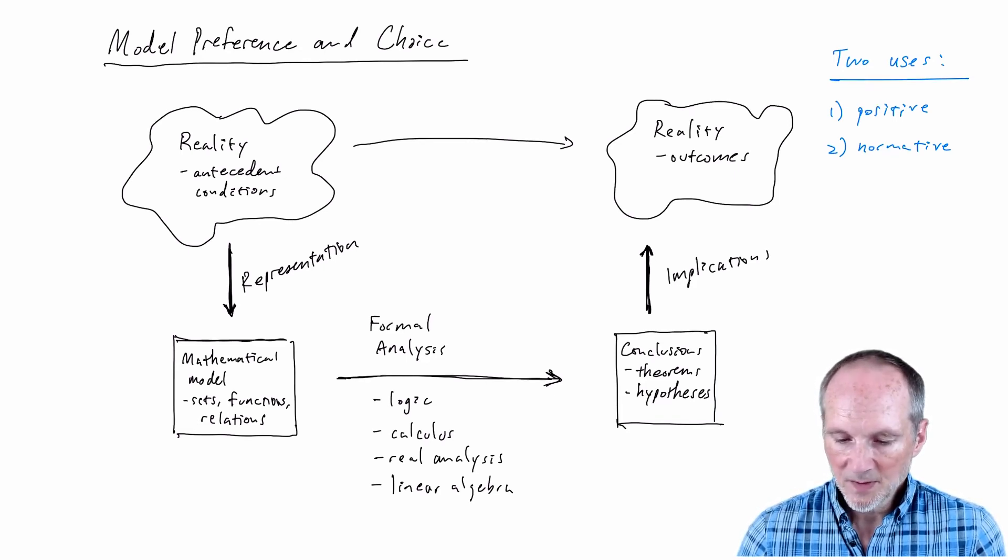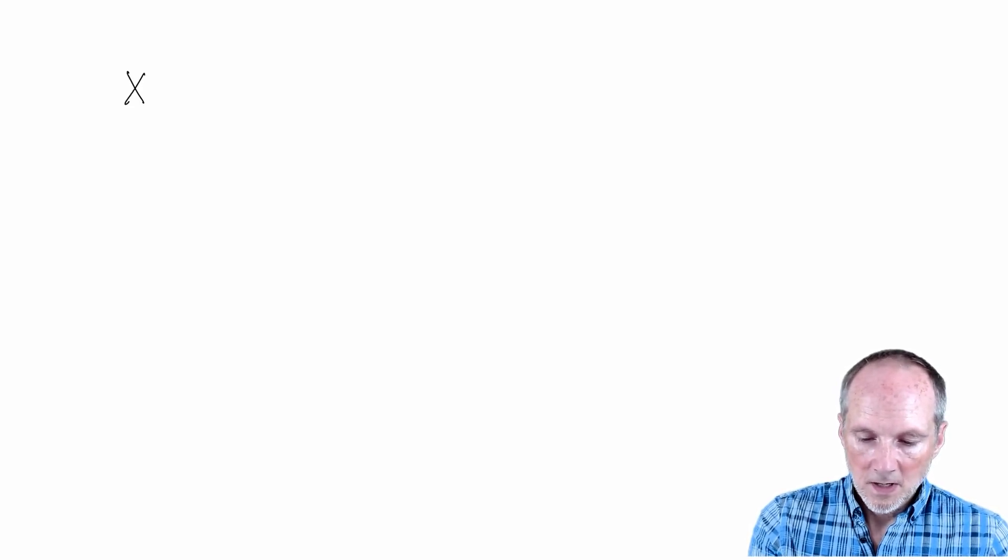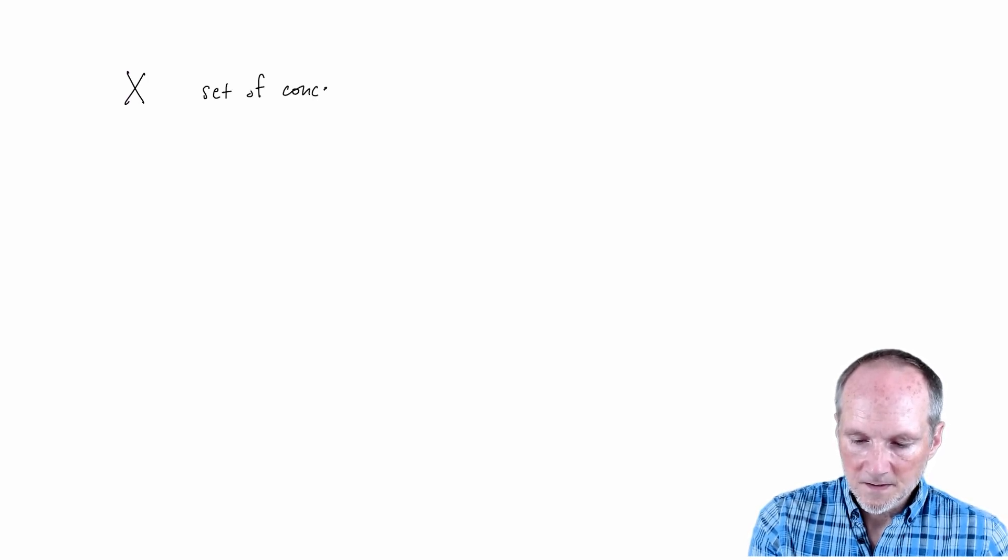So now I want to just jump into this model of preference and choice. This is like the most basic model that you would need to know to do modeling in economics and political science. In this model of preference and choice the starting point is well we have a decision maker. I'm not actually going to put them in the model because that's just kind of implicit but what I am going to start with is a set a number of options for the decision maker. I'm going to represent that with a set and I'll use this notation. I'll use X. This is going to be the set of conceivable choices for the decision maker.